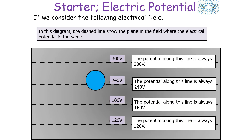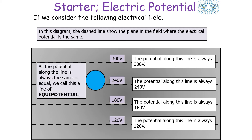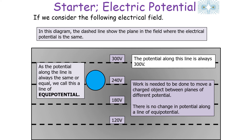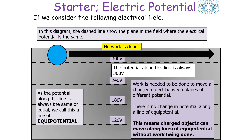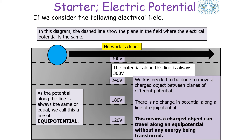The dashed lines show planes in the field where the electrical potential is the same value — for example 300 volts, 240 volts, 180 volts, or 120 volts. Because the potential along the line is always equal we call this a line of equipotential. Work is needed to move a charged object between planes of different potential, but there's no change in potential along a line of equipotential, so charged objects can move along lines of equipotential without any work being done and without any energy change.